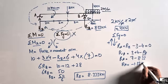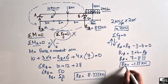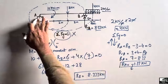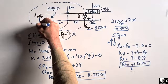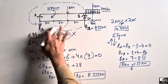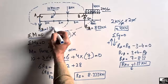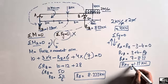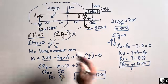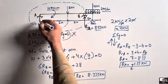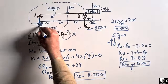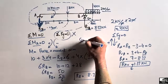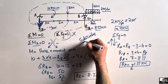This gives RA = −1.33 kilonewton. The negative sign means our assumed direction for RA was wrong. So we change the direction — RA actually acts downward with a magnitude of 1.33 kilonewton. RB acts upward at 8.33 kilonewton. Hope you guys understood. Don't forget to subscribe our channel for daily civil engineering videos. Thank you for watching.